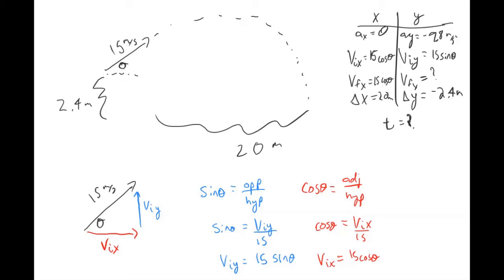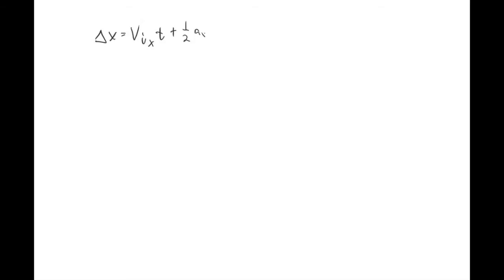Just like the last problem, if you look at your kinematic equations you would select the following one to solve for delta x. Your acceleration in x is zero, so that goes away. Plugging in values: delta x is already by itself, the initial velocity in the x was 15 cosine theta, and then you don't know the time.